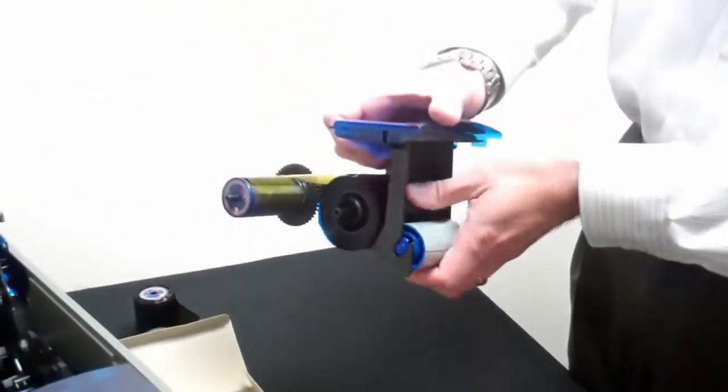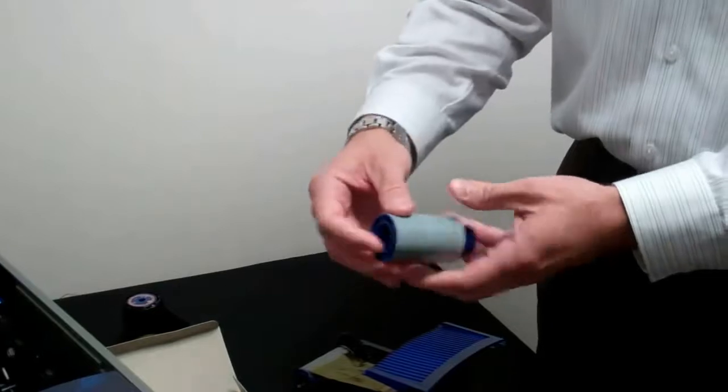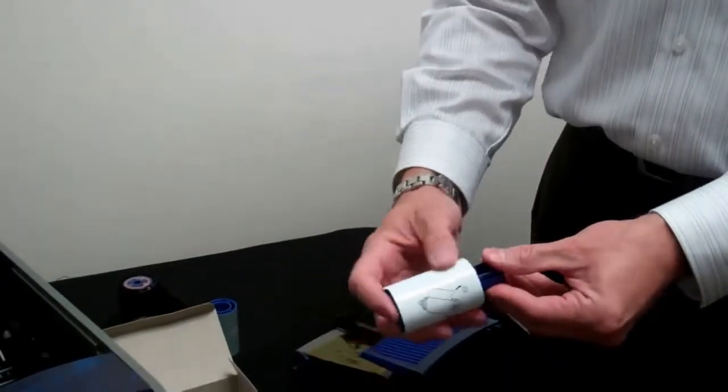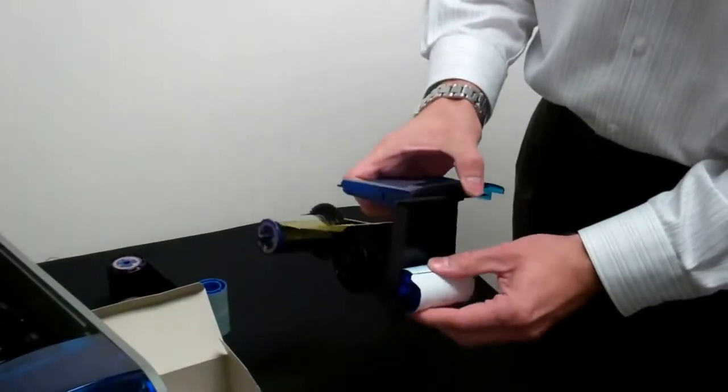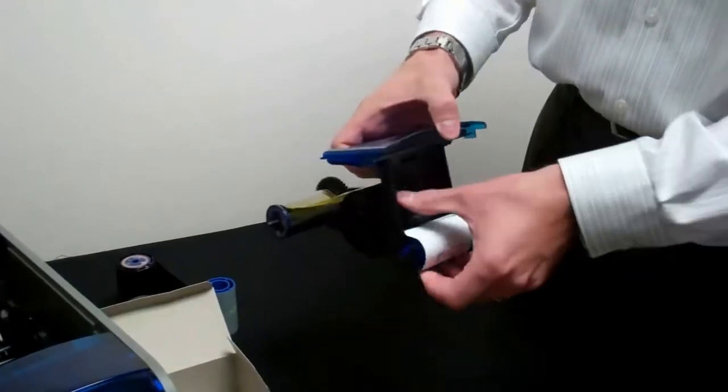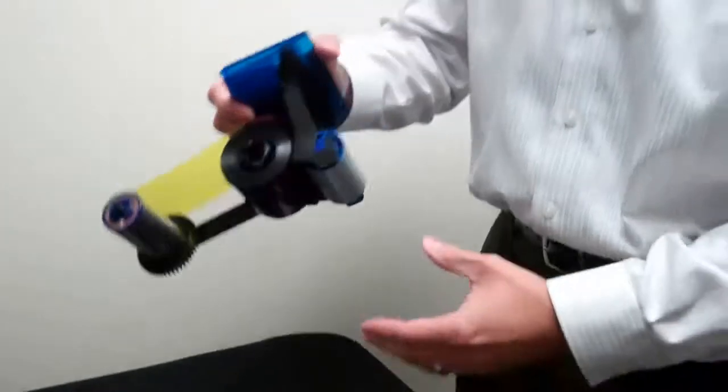At the back we've got the cleaning roller, snap that off, remove the spindle, place the new one on, snap it into place, remove the paper, and now you are good to go.